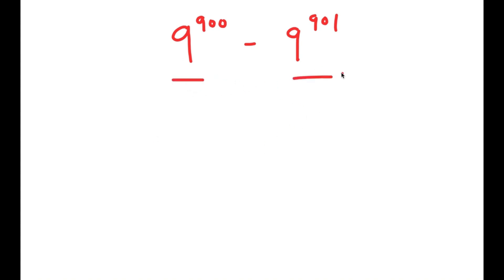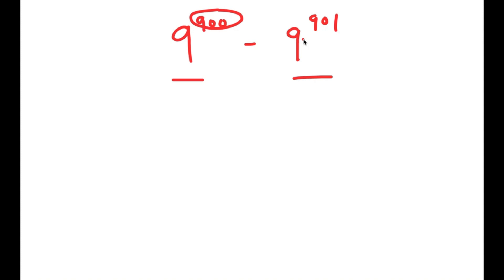We have 9 to the power of 900 and 9 to the power of 901, and these two terms are pretty similar except that the exponent for 9^900 is one less than the exponent for 9^901. The easiest way to solve this is to simplify as much as we can, and a way to do that is to factor out a term.